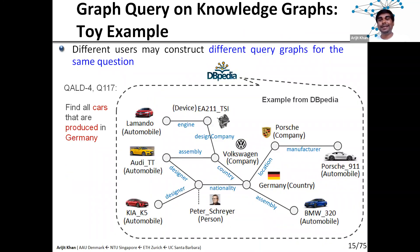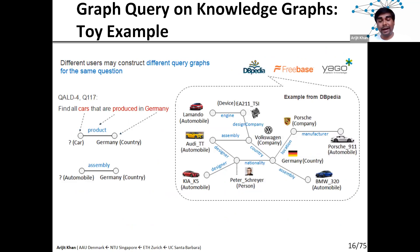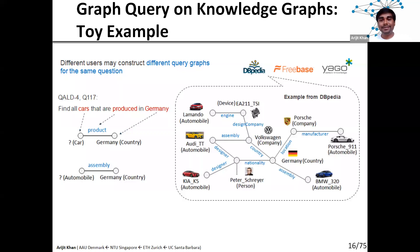Let's look at a toy example from the DBpedia knowledge graph. We have different cars, their manufacturers, companies, and countries. We are interested in the query: find all cars that are produced in Germany. One possible way is to create a query graph — one node is the car (name unknown), another is the country node (name: Germany), connected by an edge called "produced." But a smart user might observe there is no "produced" edge, only a synonymous edge called "assembly," and replace it accordingly.